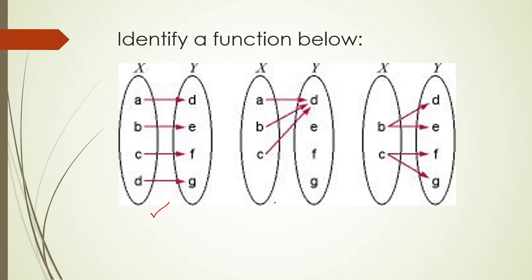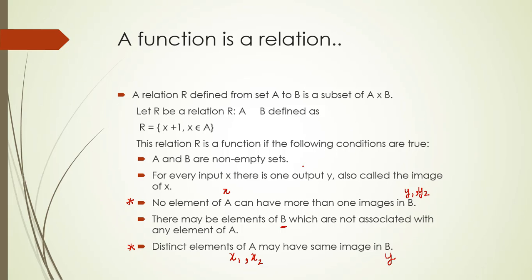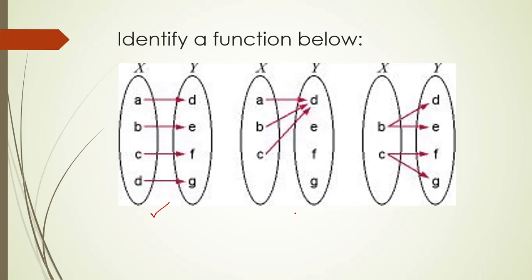Now here in this one, the three elements a, b, and c of the set X have one image y. So if we go back and look at the last point, distinct elements of A may have same image in B. This is the same case that we see over here. So this also qualifies as a function.